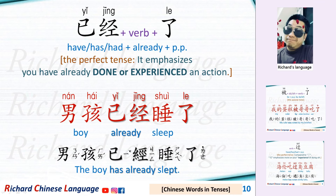已经 plus a verb plus 了. This is the perfect tense. It emphasizes that you have already done or experienced an action. For example: 男孩已经睡了 — The boy has already slept.